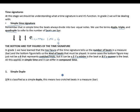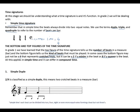Simple duple — two-four is classified as a simple duple time. This means two crotchet beats in a bar, or measure. Let's look at the example: we have a two-four, meaning two crotchets. Our first beat, second beat — beat one and beat two. Beat one is divided into two notes.